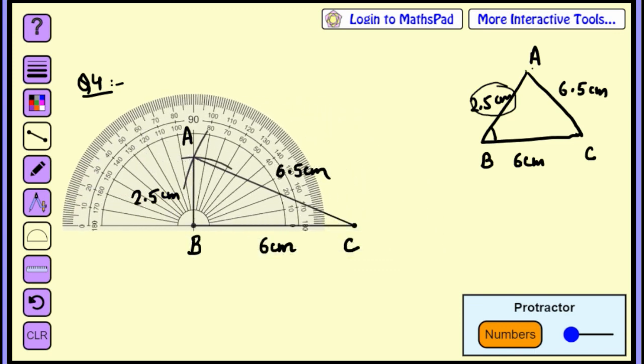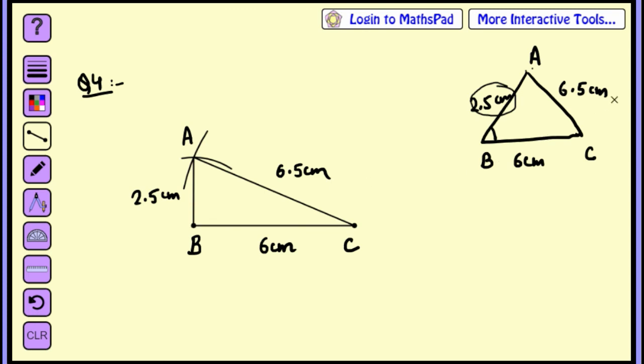Now we have to measure angle B. So take your protractor. Place your protractor like this. It will coincide 0 with your base. So you can see this line AB is making 90 degrees.